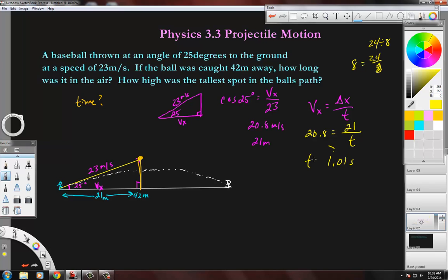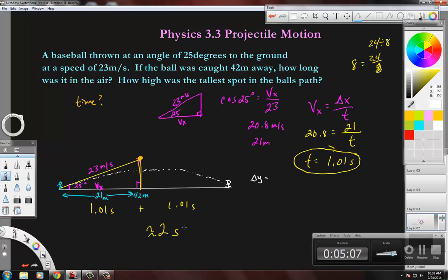So this is our time interval. Now that we know our time interval, we can figure out how long it was in the air and how high the tallest spot is. If it takes 1.01 seconds to go half this distance, assuming the ball's speed didn't slow down, it would take just about two seconds. So this would be 1.01 seconds plus another 1.01 seconds.